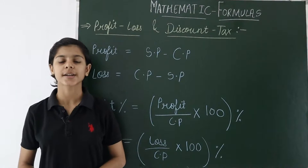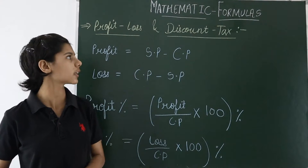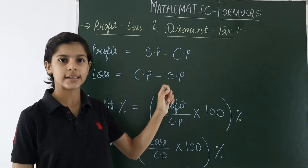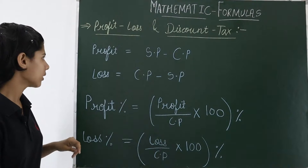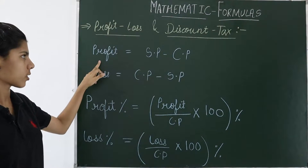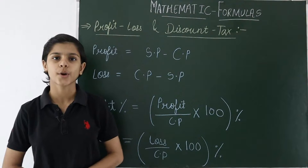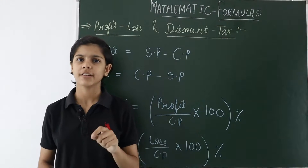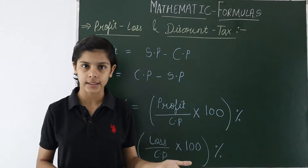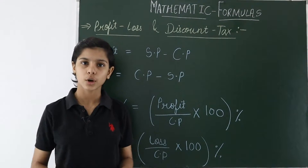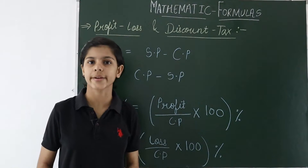Now let's quickly get started with our topic, Mathematic Formulas. The first chapter from which we will take the formulas is Profit, Loss, and Discount Tax. In this chapter we see many formulas. If we have to calculate Profit, the formula is Selling Price minus Cost Price. If I have bought any object and sold it, I will have a Profit or a Loss. So for calculating Profit, the formula is Selling Price minus Cost Price.